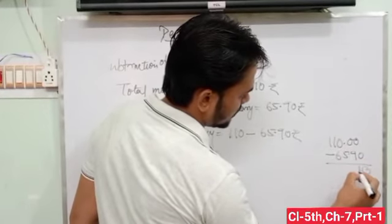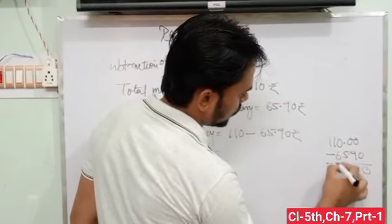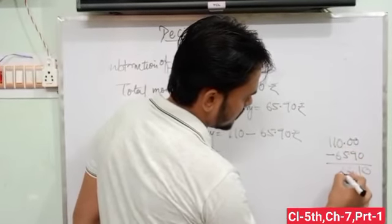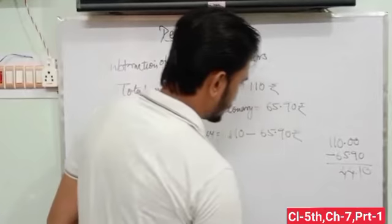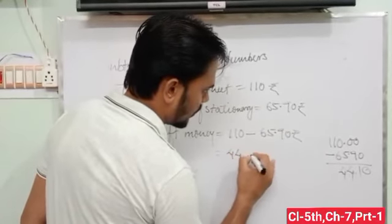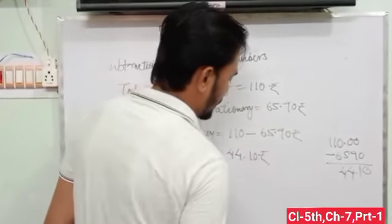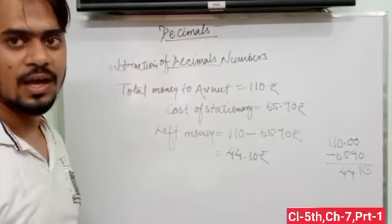The answer is 0 minus 0, 10 minus 9 is 1, 9 minus 5 is 4, 10 minus 6 is 4. 44.10 rupees Avnith has left.